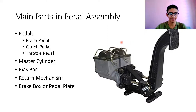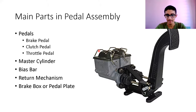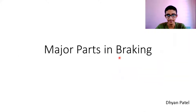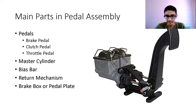Now let's look at the major parts of the pedal assembly. The pedal assembly includes all parts near the driver, assembled in a box-type arrangement. There can be two configurations: the pedal can be hinged from the top with the pedal hanging downward, or hinged from the bottom with the pedal upright. Both configurations are valid. This slide also shows two master cylinders with a bias arrangement, allowing more pressure on the front and less on the rear, or vice versa.